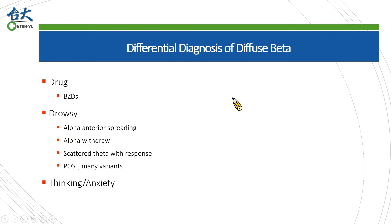In this situation we may observe other characteristics in EEG, including anterior spreading of alpha waves and disappearance of alpha waves, some theta waves posteriorly. Most importantly, all these features must have a response to alerting maneuvers. If you often think a lot of things in your head or if you have anxiety, the beta waves may also be stronger.